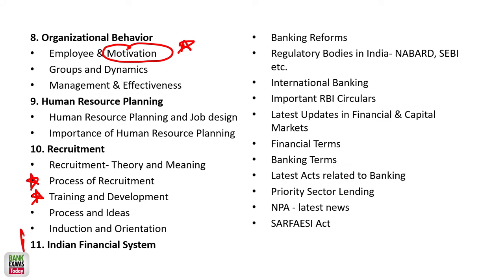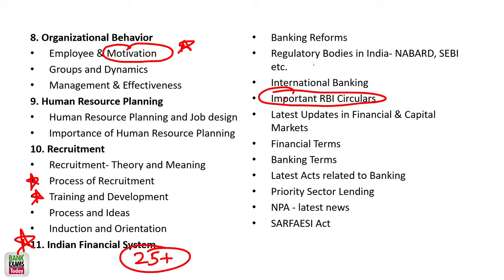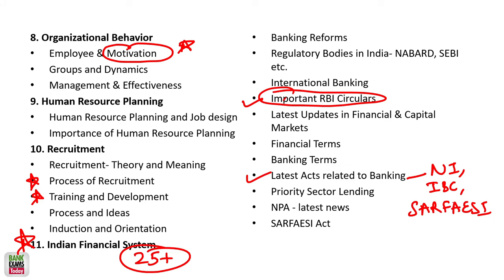The most important section here is the Indian financial system. You'll find most of your questions in the exam from Indian financial system only — I can guarantee 25 plus questions directly from it. RBI guidelines, circulars, and master circulars are the most important part, followed by latest acts related to banking: Banking Regulation Act, Negotiable Instruments Act, IBC, and SARFAESI Act. Basic understanding of IBC can be done within 20-25 minutes. Priority sector lending is an RBI circular only.